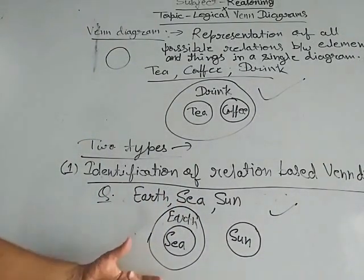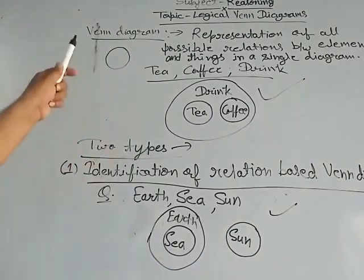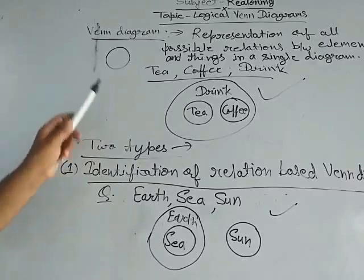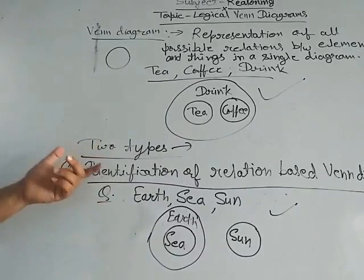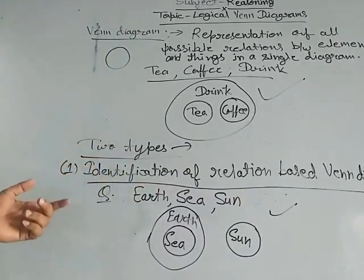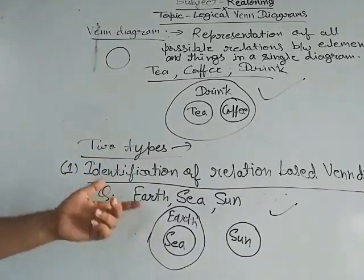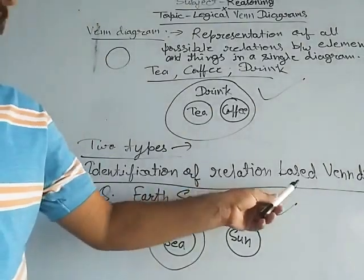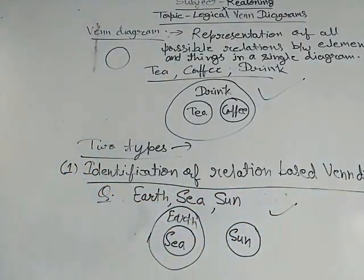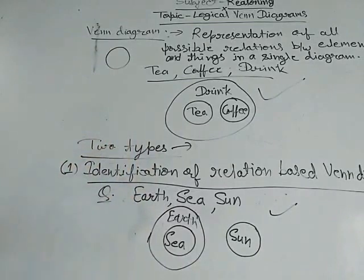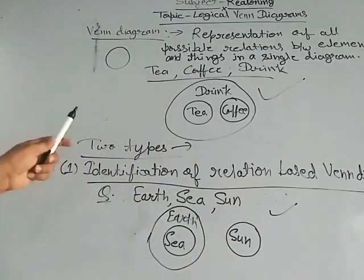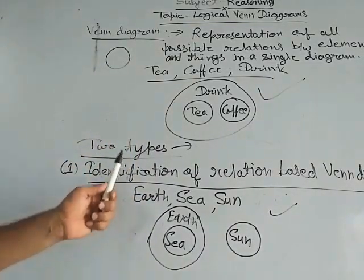I hope you get it. So we have studied about Venn diagrams — what a Venn diagram is — and the first type of question asked in the examination: identification of relations based Venn diagram. Note it down in your notebook and practice it. We will continue in the next class. Thank you.